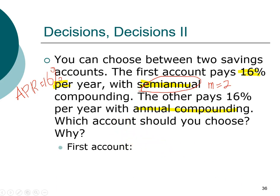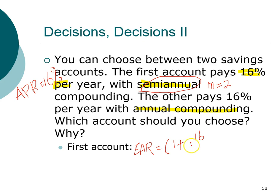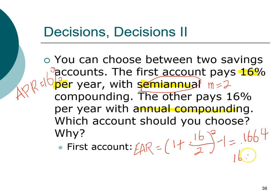For the first account, we can find the EAR using the formula. If you don't have it handy, turn to your formula sheet. It's one plus the annual percentage rate of 16% — convert the percentage to a decimal — raised to the power of M, which is 2, minus 1. The EAR turns out to be 16.64%.